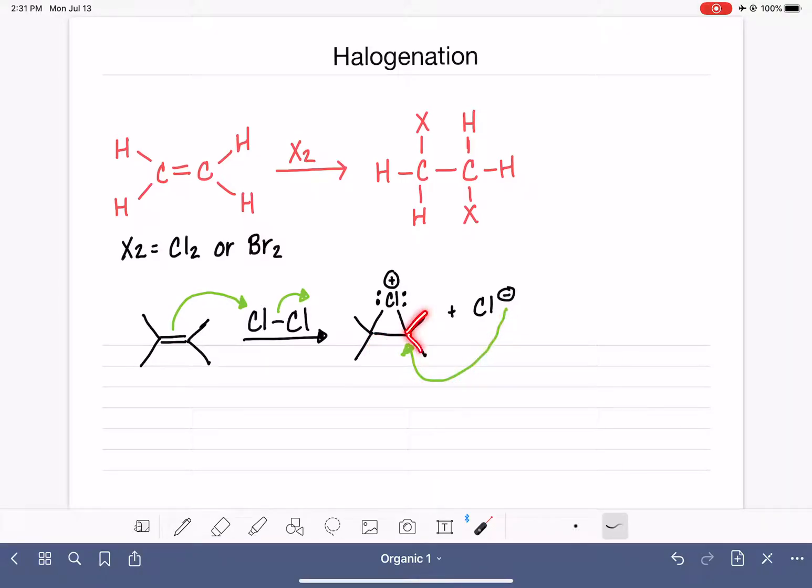But when we have an asymmetrical alkene, then we will have to consider the possibility of that halogen attacking both of those carbons and all of the different products that could be formed by that attack.